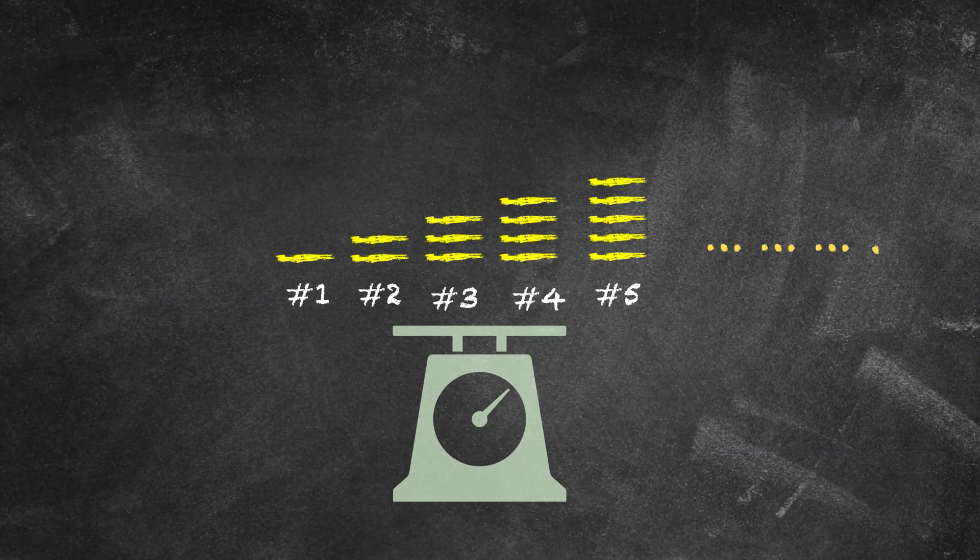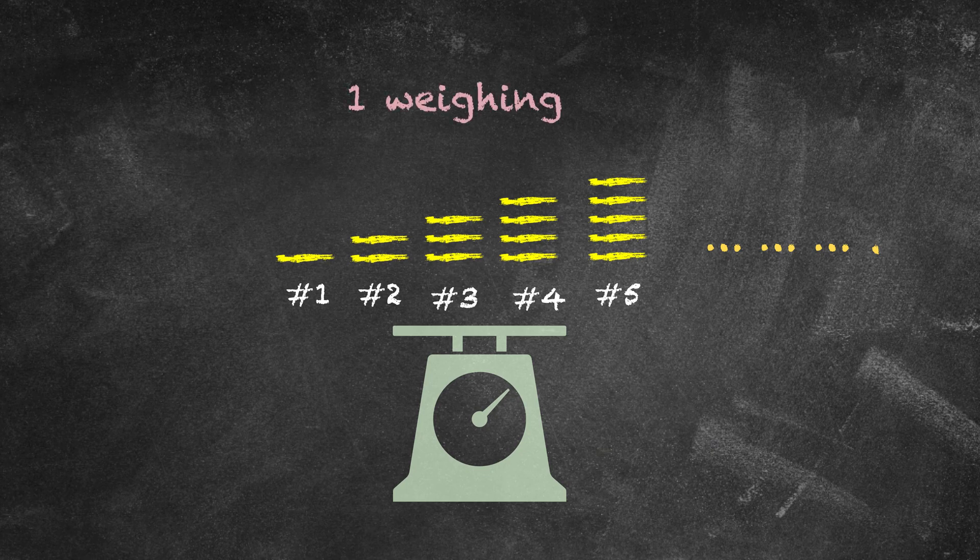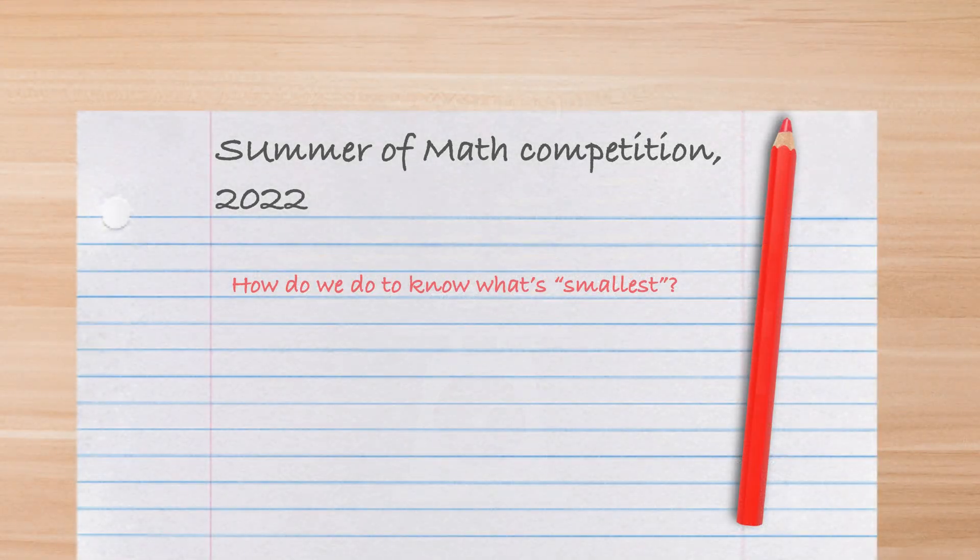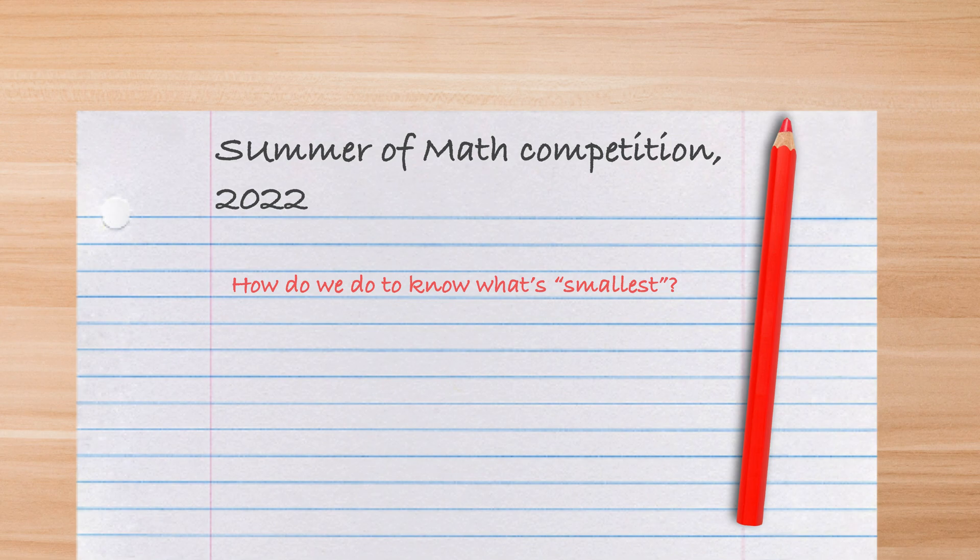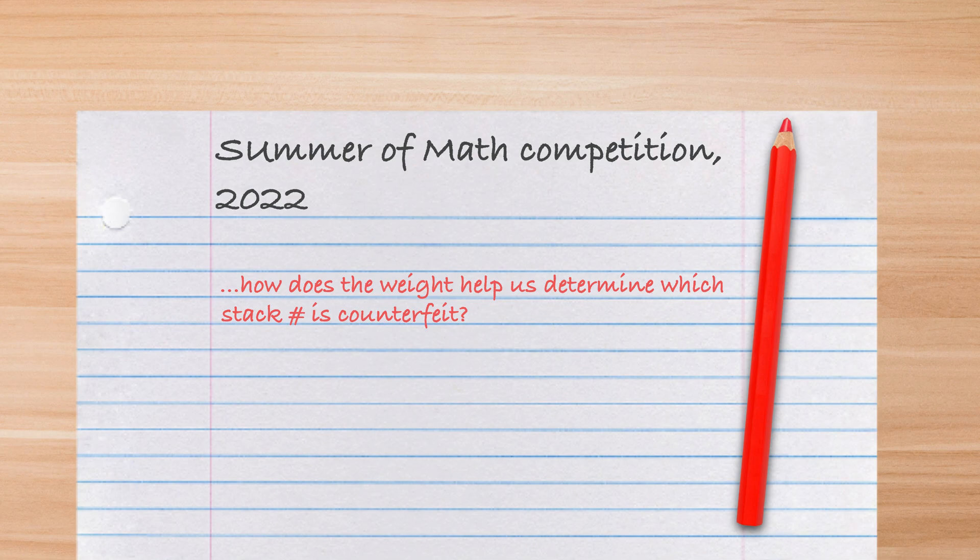The counterfeit stack can be therefore determined by one weighing only, which is quite unexpected. Because the word smallest creates a kind of inertia that induces one to ignore the most ideal solution that is one weighing only. Okay, that makes sense, but how does the weight measured by the scale help us determine the number of the counterfeit stack?